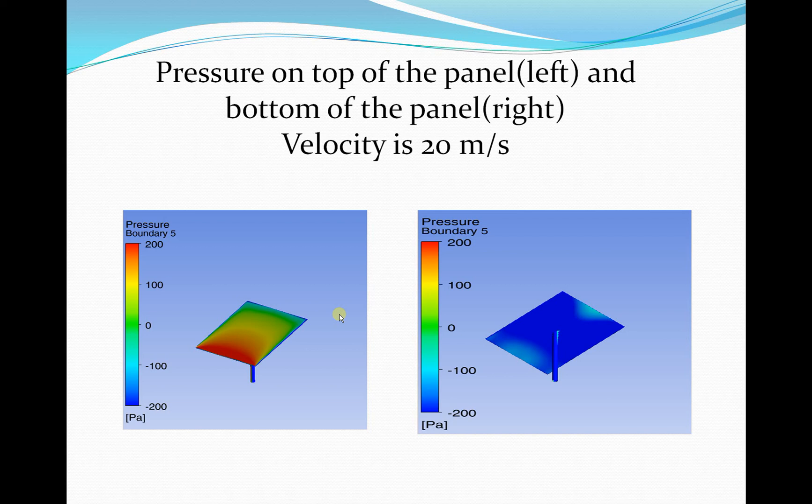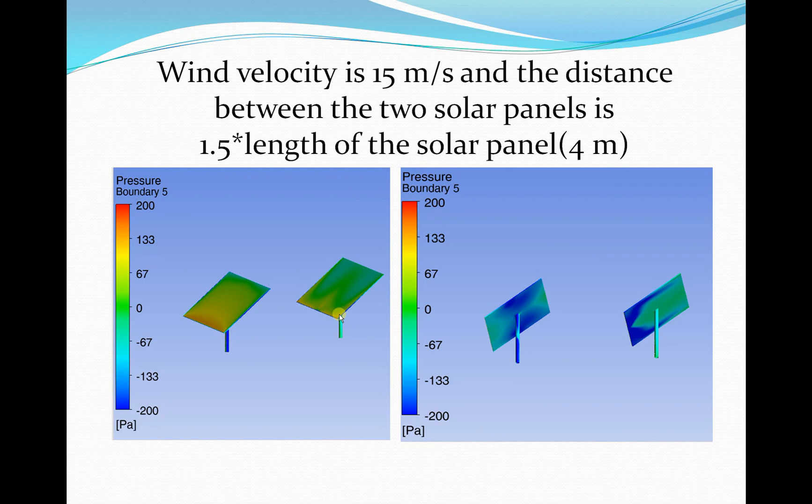At a velocity of 20 meters per second, the bottom surface of the panel has more pressure than the top surface. On the underside of the solar panel we have less pressure, so we get a kind of lift force. Looking at two panels, the first panel has more pressure than the second one because they are arranged in an array configuration.